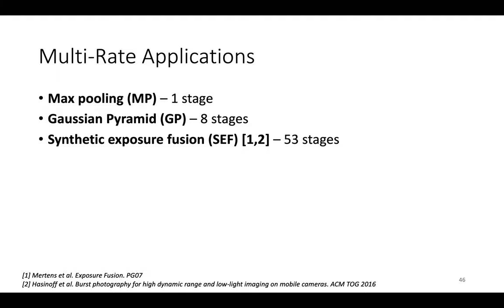Next, multirate applications will be discussed in the next video. To test a wider range of application sizes, three multirate applications were used: Max Pooling with one stage; Gaussian Pyramid with 8 stages, which builds image representations by successively blurring and downsampling;